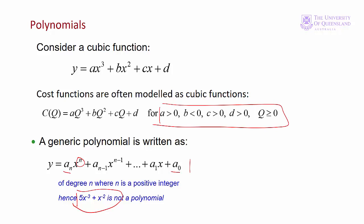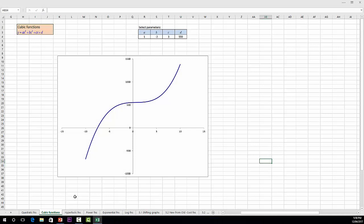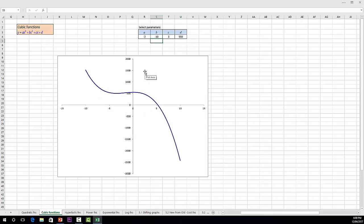You can see how the parameters affect the shape of the cubic function in Excel. Here we have a typical cubic function. We can see that the constant d is the intercept on the y axis, 550. If we change the coefficient of the cubed term, say to minus 2, that it goes from an increasing to a decreasing function. If we change the value of the coefficient for the squared term, it changes this area of the function. If we decrease it, we have less of a kink. If we increase it, then we have more of a kink there. We'll come back to cubic functions in Module 4.